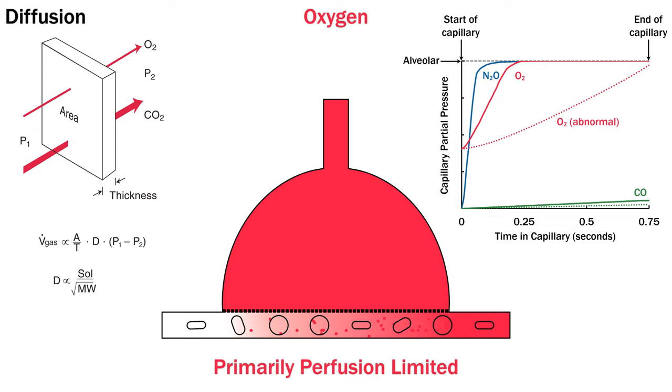Oxygen can still be affected by the same diffusion limitations that affect carbon monoxide. Typically, this involves thickening or destruction of alveolar membranes that you might see in pulmonary fibrosis or emphysema. As you can see on the graph, oxygen with abnormal diffusion is partway between perfusion and diffusion limited.